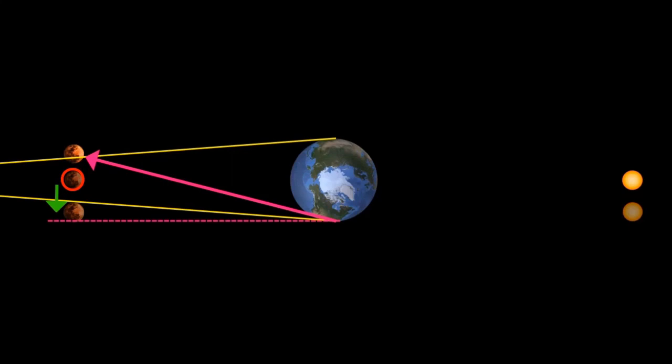Ron's footage shows a moon that is an entire diameter on the other side of the peak full position. There is no amount of refraction or other hand waving that will save the globe model from Ron's observation.